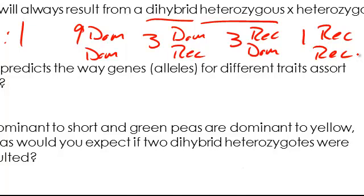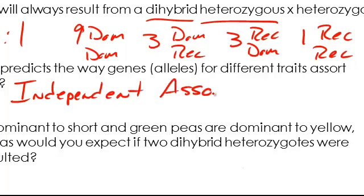Number ten, what law of Mendel's predicts the way genes or alleles for different traits assort during gamete formation? This is Mendel's third law, which is called the law of independent assortment. This is the law that makes it possible for us to use the rule of multiplication to do complex problems, independent assortment.